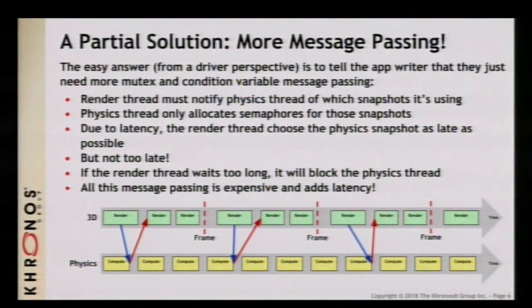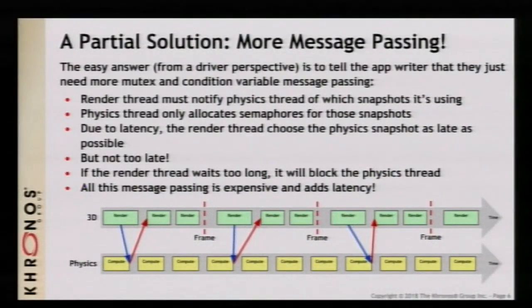One solution is to tell the application to pass more messages. The renderer thread can notify the physics thread which semaphores it's using, and ideally early enough that the physics thread doesn't bother creating the semaphore if it won't be used. But when we do this, we add latency, more message passing, more round trips through the kernel from mutexes, which is not good for performance. It's painful for the application to write and painful for efficiency, because you really need to be working speculatively in your different threads to try and guess what the other one is doing. Telling the application to just pass more messages isn't really a good solution.